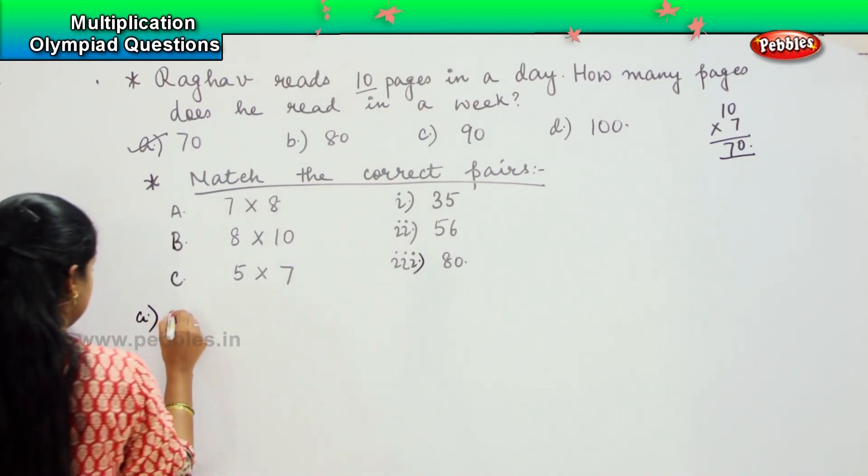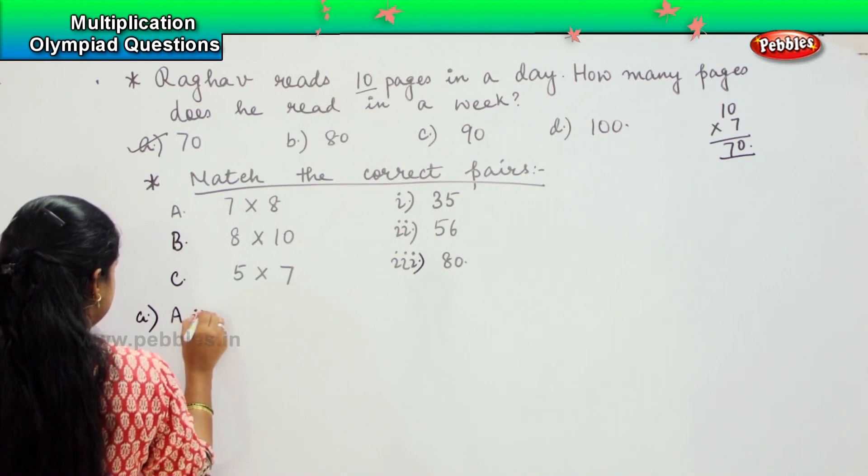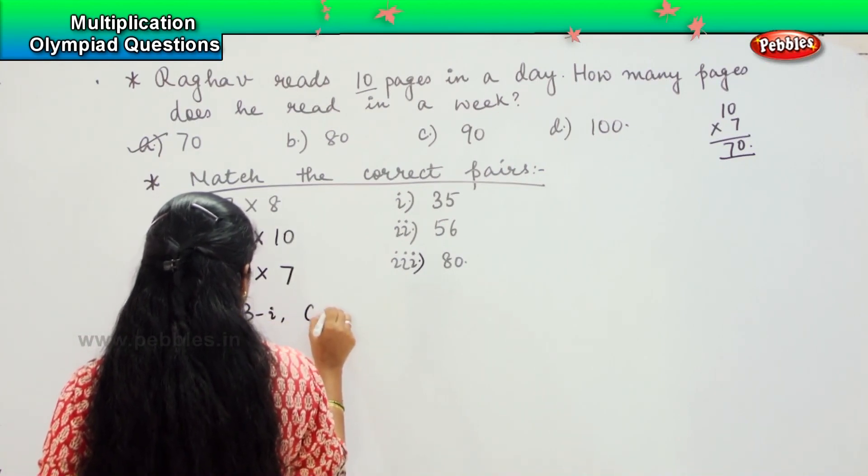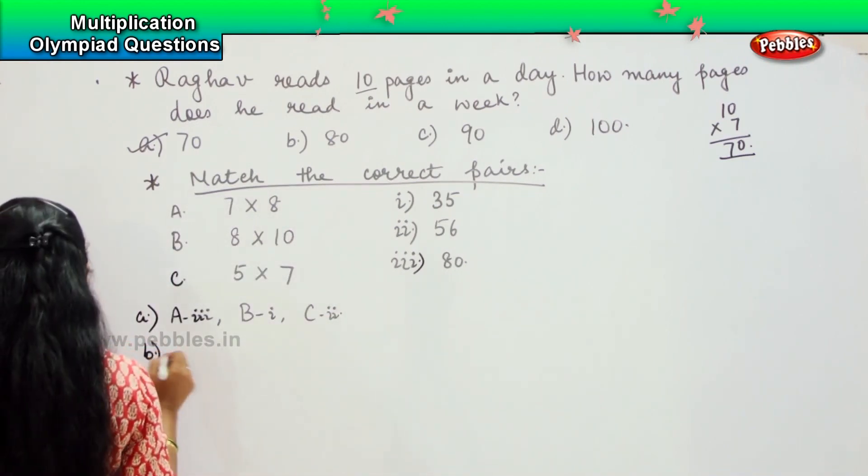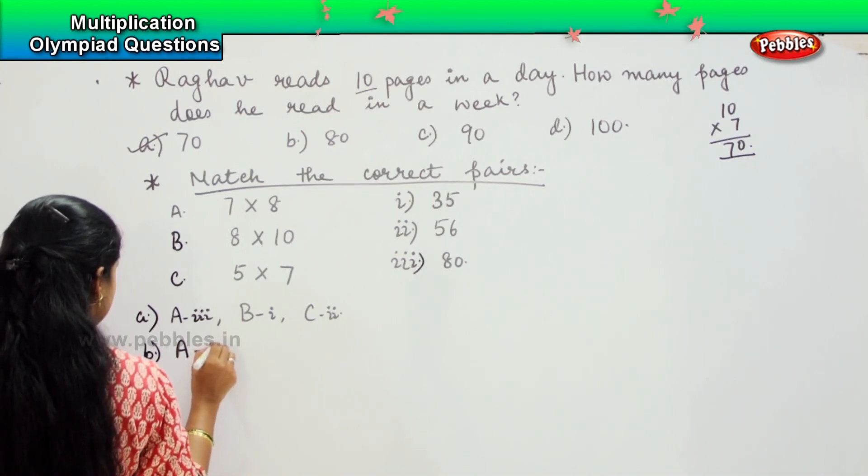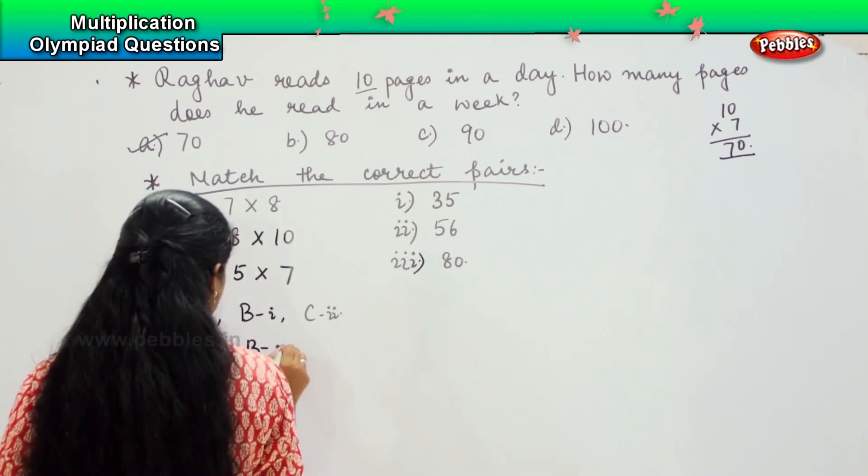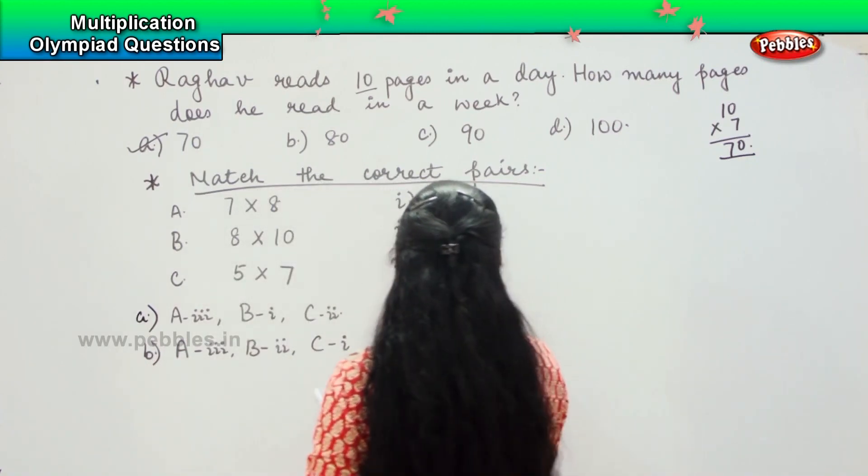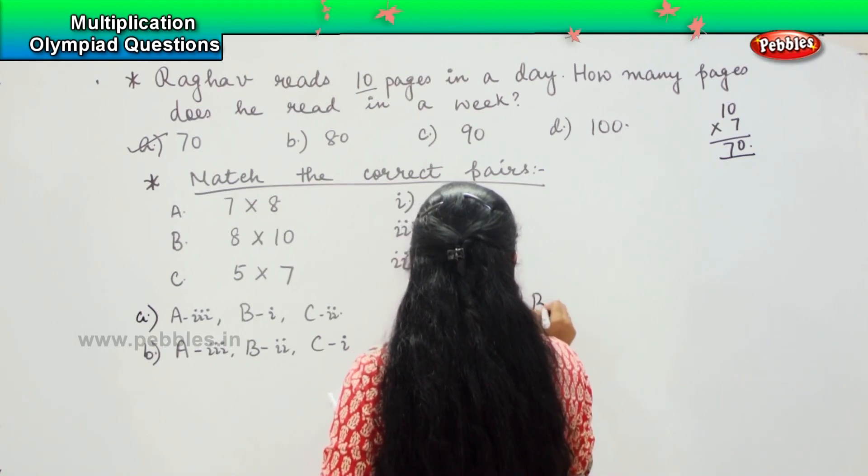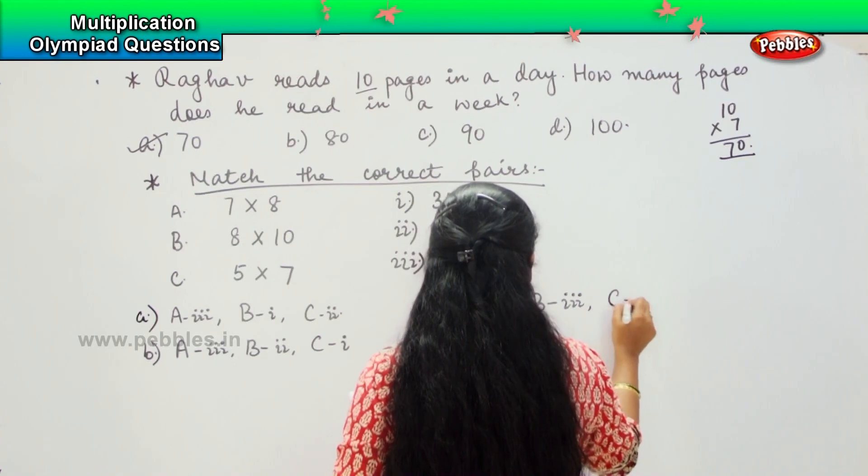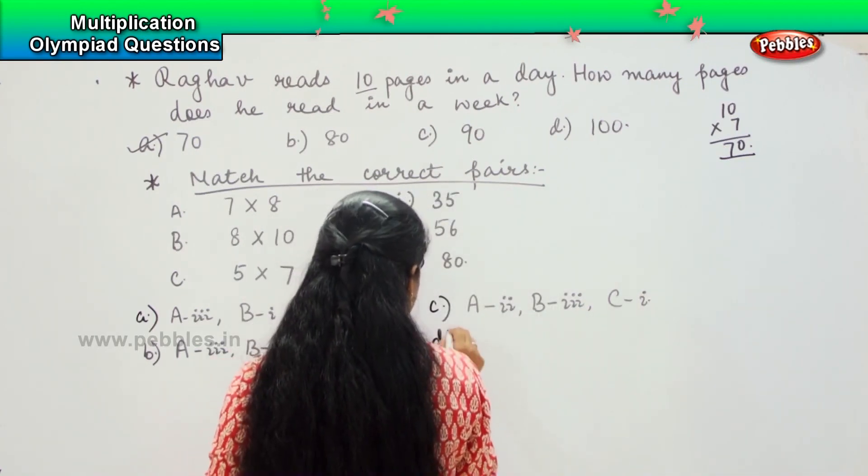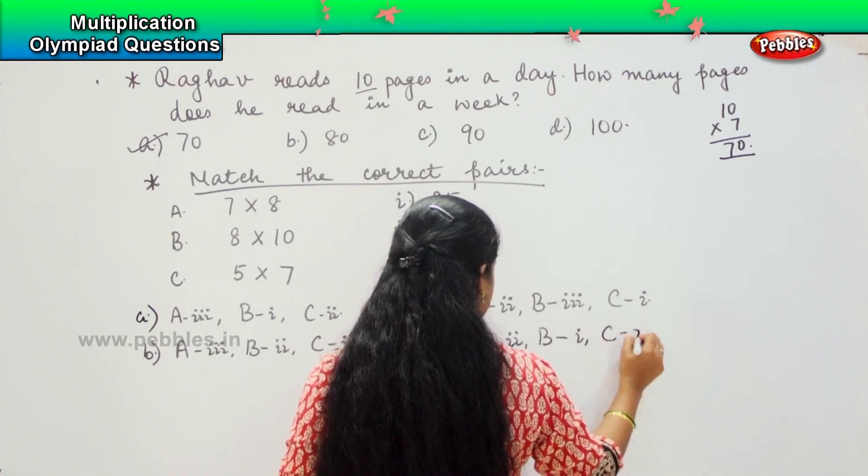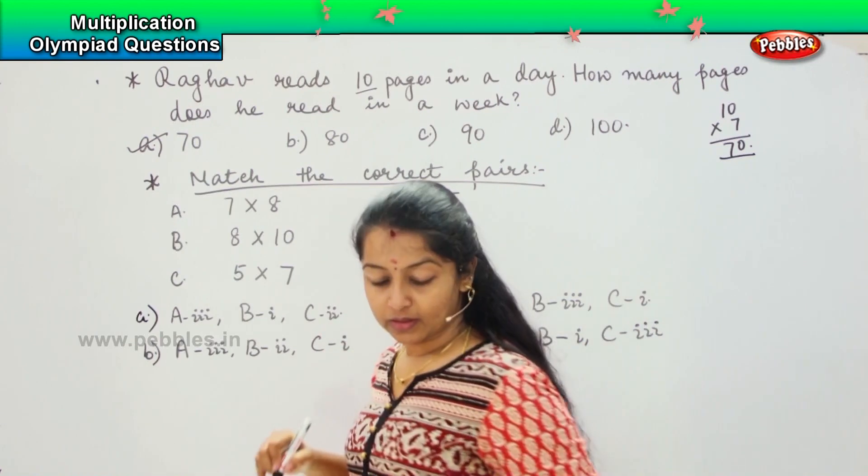Your options are: option A is A-3, B-1, C-2; option B is A-3, B-2, C-1; option C is A-2, B-3, C-1; and option D is A-2, B-1, C-3.